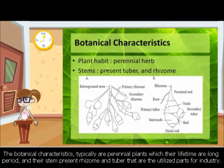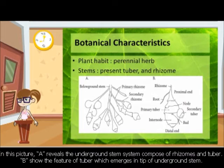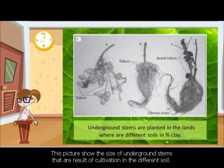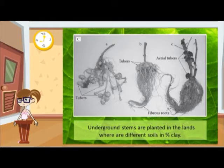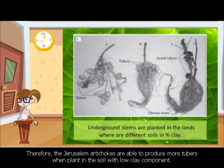The botanical characteristics: they are typically perennial plants with a long lifetime. Their stem presents rhizomes and tubers, which are the utilized parts for industry. Picture A reveals the underground stem systems composed of rhizomes and tubers. Picture B shows the feature of the tuber which emerges at the tip of the underground stem. The size of underground stems differs based on soil clay content — the left stem is planted in soil with low clay and the right in soil with high clay. Therefore, Jerusalem Artichoke produces more tubers when planted in soil with low clay.